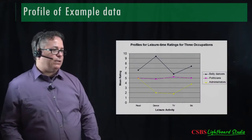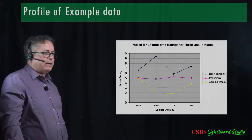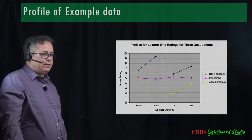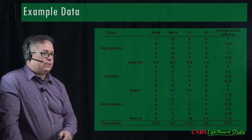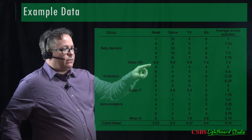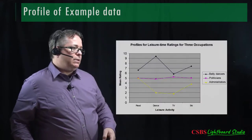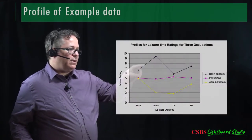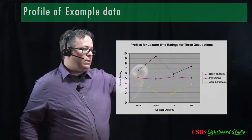If we plot things out, we can think about the different patterns. This graph is best suited for visualizing the interaction. Belly dancers have means of 6.6, 9.4, 5.8, and 7.4 — those are their four cell means plotted. We're just plotting out the cell means for each group.